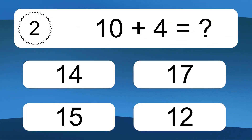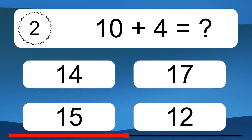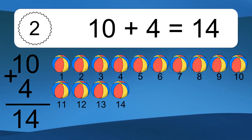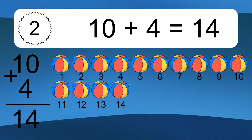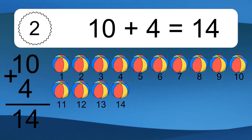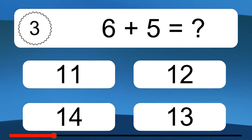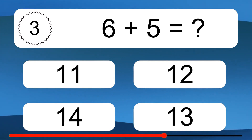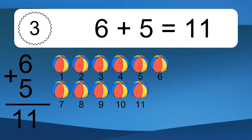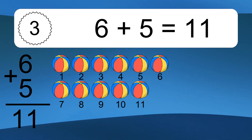10 plus 4 equals what? 10 plus 4 equals 14. Let's count it: 1, 2, 3, 4, 5, 6, 7, 8, 9, 10, 11, 12, 13, 14. 6 plus 5 equals what? 6 plus 5 equals 11. Let's count it: 1, 2, 3, 4, 5, 6, 7, 8, 9, 10, 11.